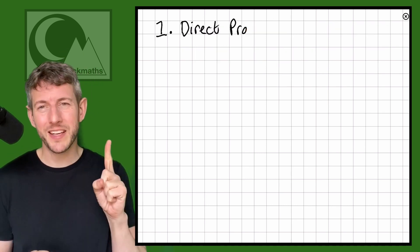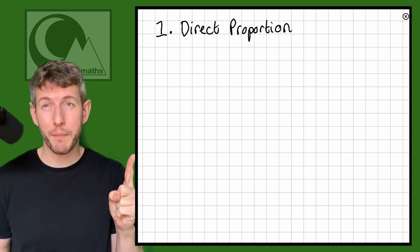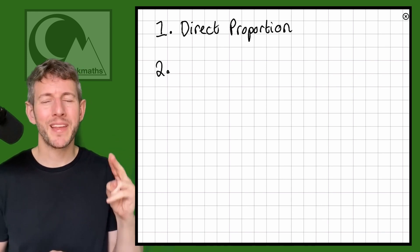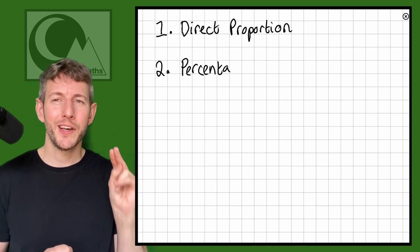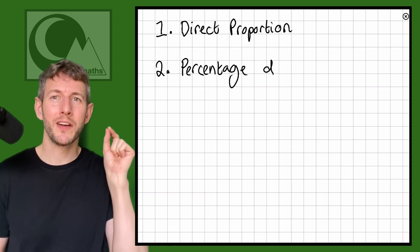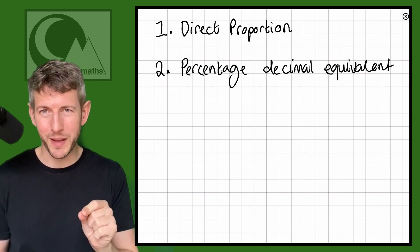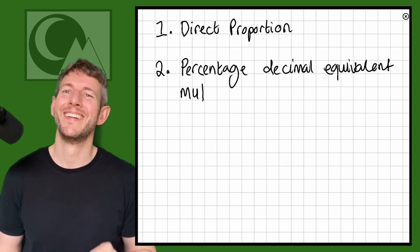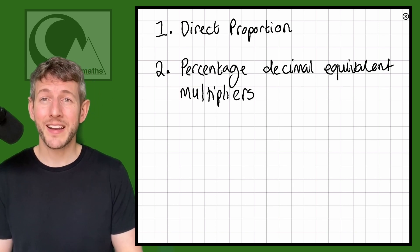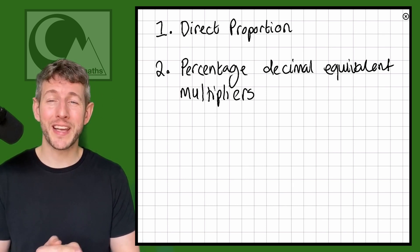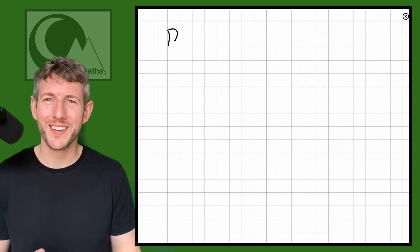Firstly, we're going to look at a method using direct proportion, and secondly, we're going to look at a method using the percentage decimal equivalent multipliers. So let's get cracking and have a look at direct proportion first.